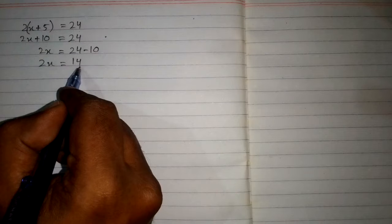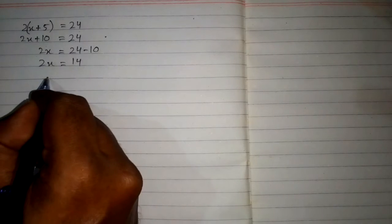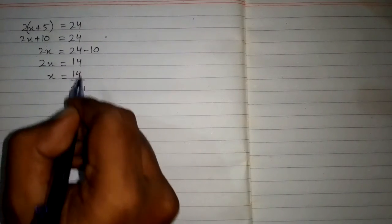Now we will take this 2 on the other side. We can see that 2 is multiplying on this side, so when we take 2 on the other side of the equation it will divide 14. So we have x is equal to 14 divided by 2.